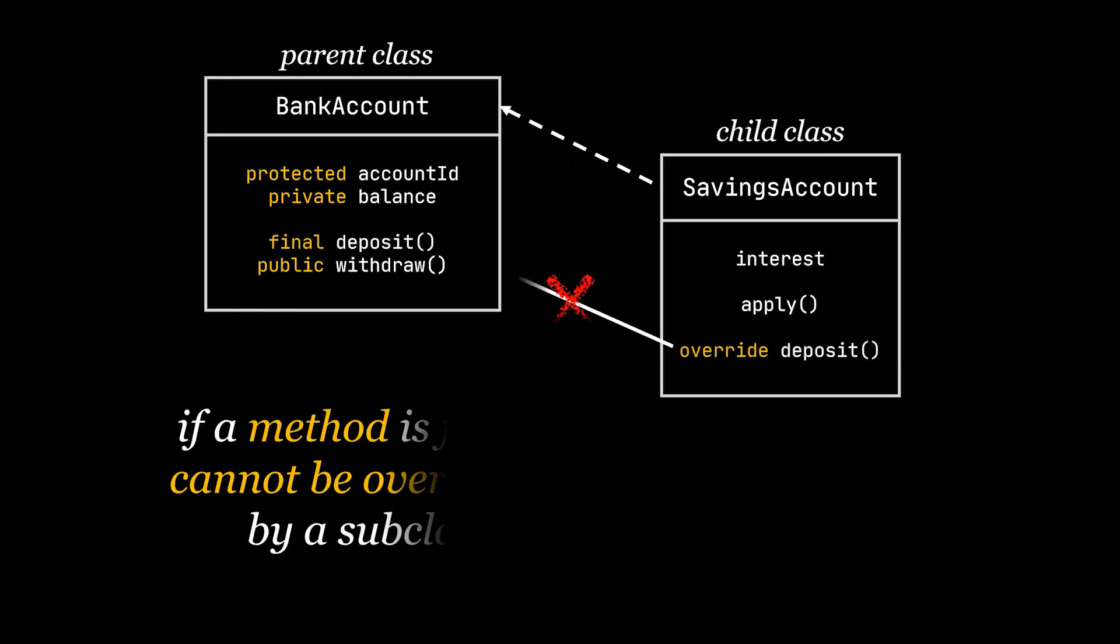So in our case, if we were to override the deposit method in our SavingsAccount class in order to use polymorphism, yet this method was marked as final, then guess what? We can't.